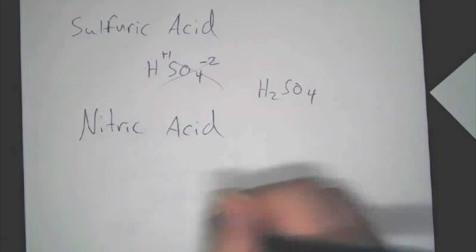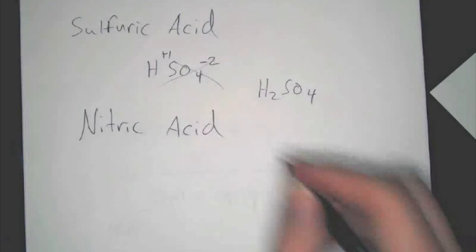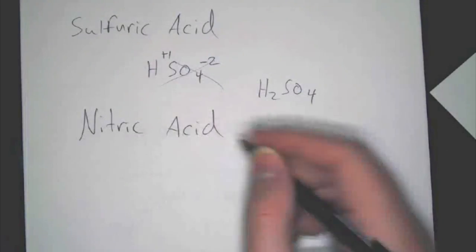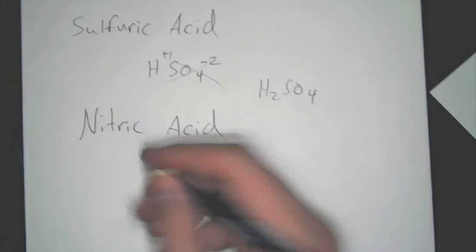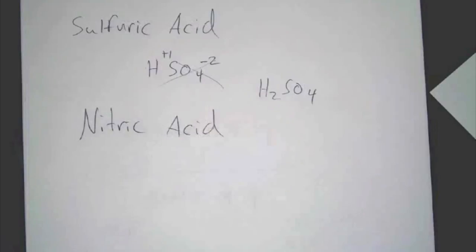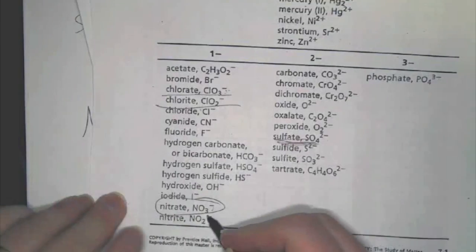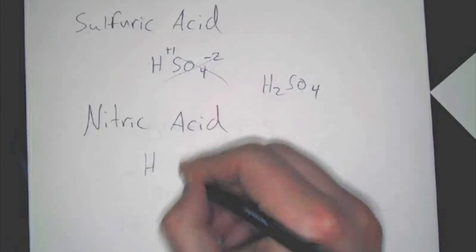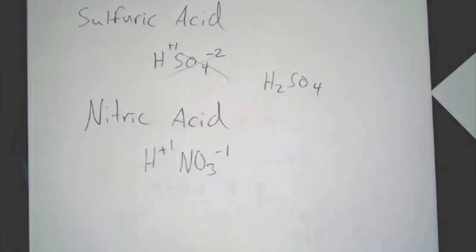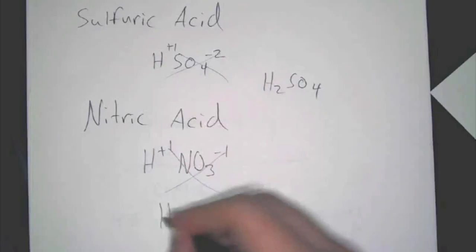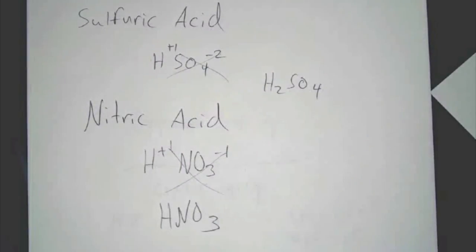So, nitric acid. For nitric acid, if you look, what do you think nitrate is? Nitrate, yeah. So, if you look, nitrate is NO3 negative 1. So, you put an H in front, NO3, it's negative 1, it's positive 1. You crisscross, what does it come out to be? HNO3. And that's it.